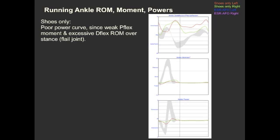Going to the powers, gray band being normal, you'll see there's a period of absorption followed by a very strong period of generation. The magnitude of that generation is directly linked to how fast that person is running and obviously the energetics of forward propulsion. In the shoes-only condition, you see a very poor power profile which, like in walking, is largely due to the fact that it's a flail joint.